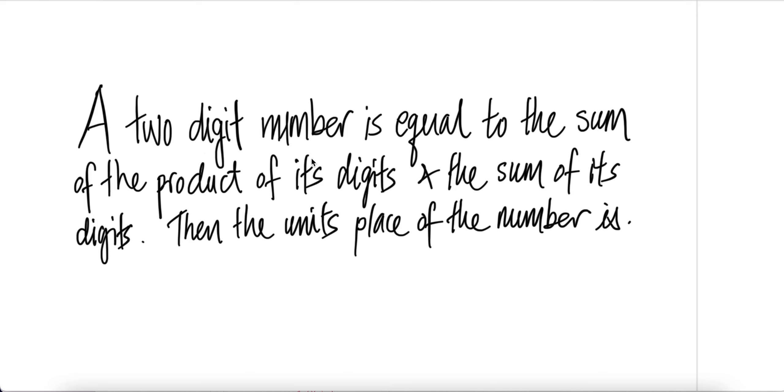A two-digit number is equal to the sum of the product of its digits and the sum of its digits. Then the unit place of the number is...